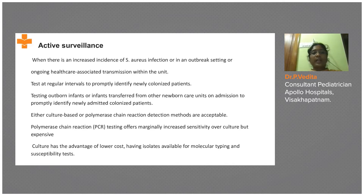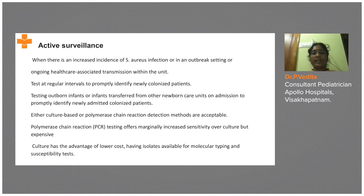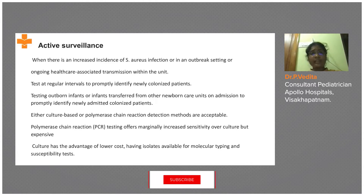Coming back to surveillance methods: either culture-based or polymerase chain reaction (PCR) detection methods can be used. PCR has increased sensitivity over culture but is expensive. Culture has the advantage of lower cost, and you have isolates on the plate for molecular typing and susceptibility testing — an advantage PCR does not offer. However, PCR has higher sensitivity, and according to the latest CDC guidelines there is an increased tendency to go for PCR for Staphylococcus aureus.